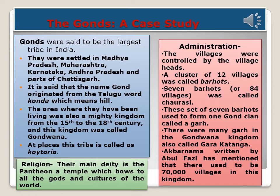Now we will do the case study of the Gonds and the Ahoms. The Gonds were said to be the largest tribe in India. They were settled in Madhya Pradesh, Maharashtra, Karnataka, Andhra Pradesh, and parts of Chhattisgarh. The name 'Gond' is said to have originated from the Telugu word 'Konda,' meaning hill. The area where they lived was also a mighty kingdom from the 15th to the 18th century, called Gondwana. In some places this tribe is also called Koitoria.